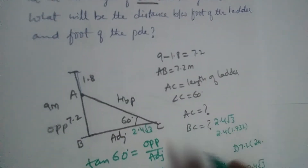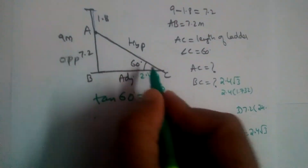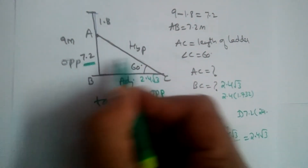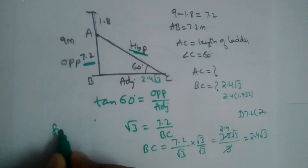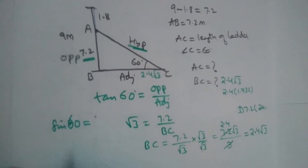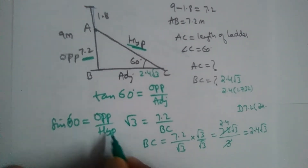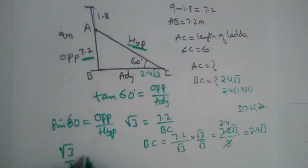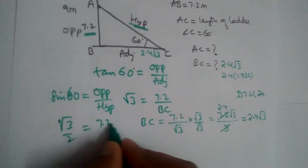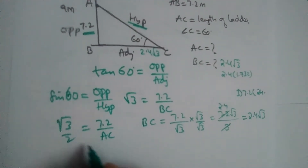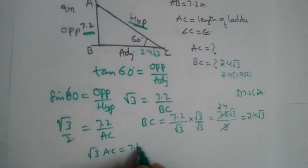Now let us find AC. To find AC, we use opposite and hypotenuse, which comes in the sin formula. Sin 60 degrees equals opposite divided by hypotenuse. Sin 60 is √3/2, which equals 7.2 divided by AC. Cross-multiplying: √3 × AC = 7.2 × 2 = 14.4.